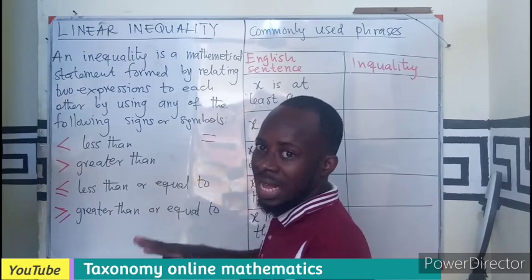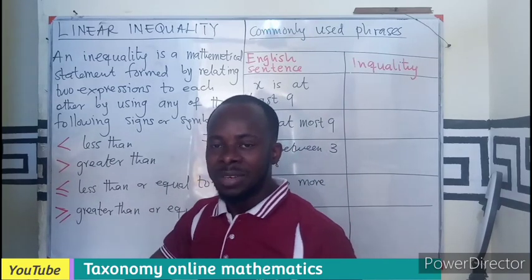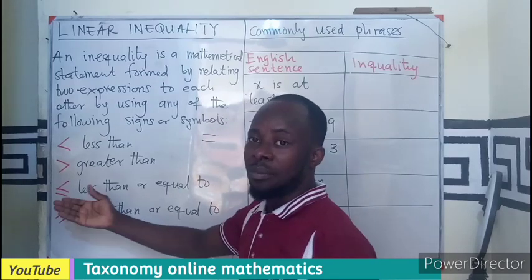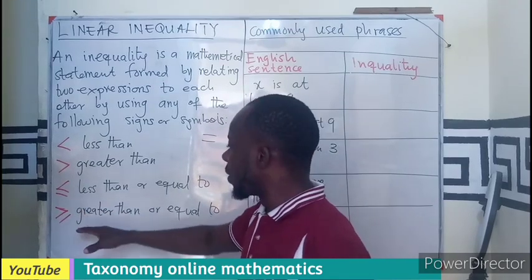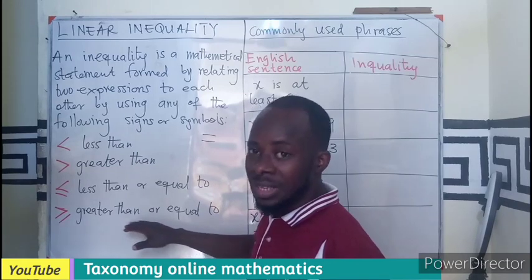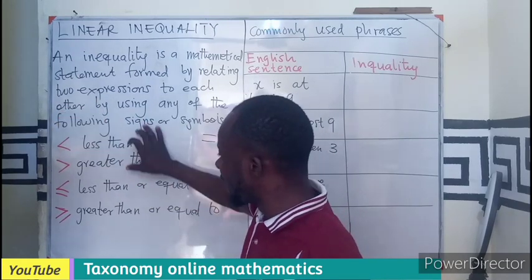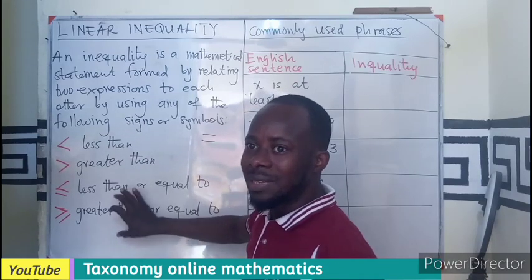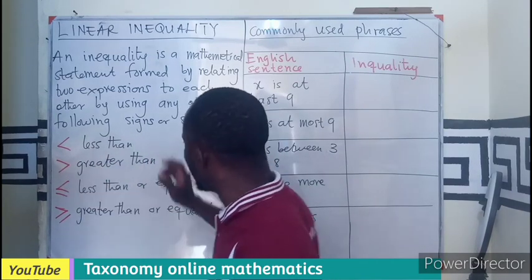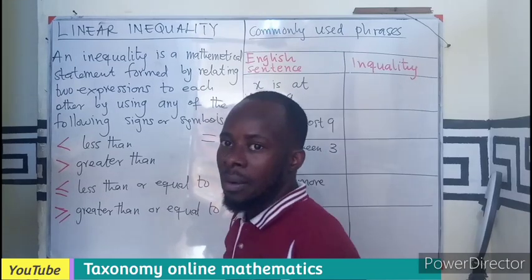Greater than or equal to also has some slack in it. For example, you can spend five CDs in a day or more — meaning you can spend five CDs or above. These are the mathematical symbols we will be using in place of the equal sign.